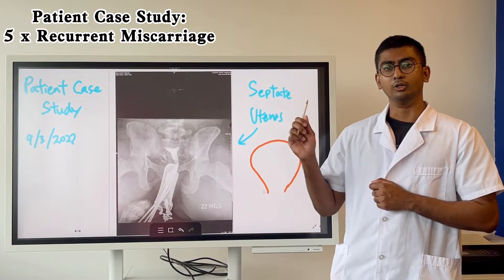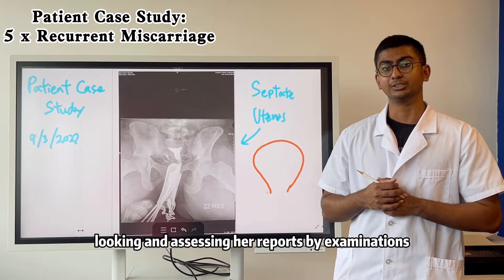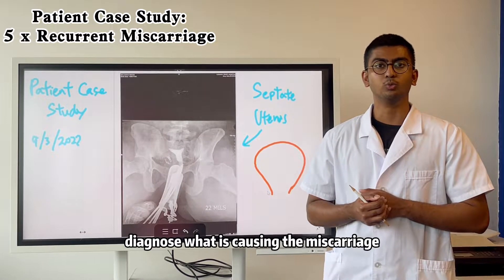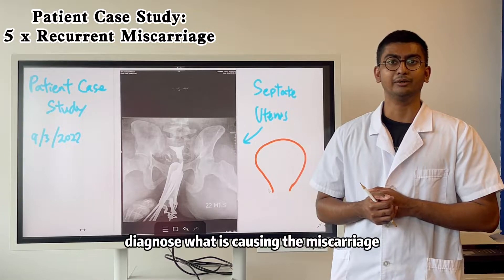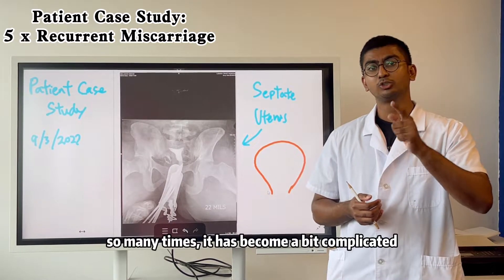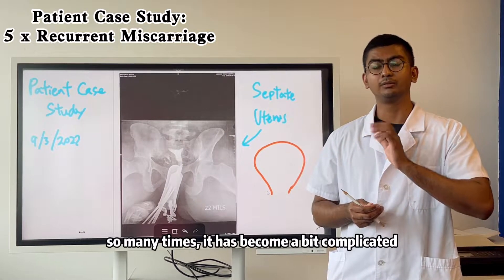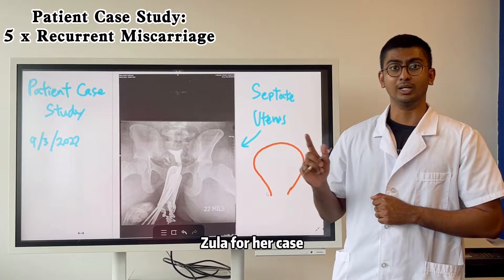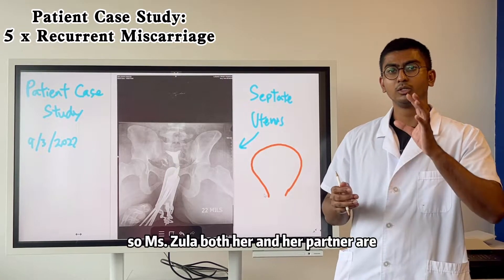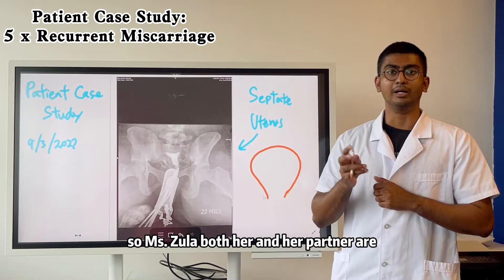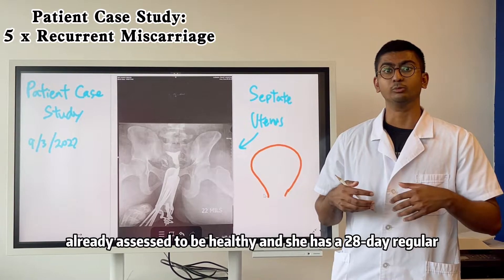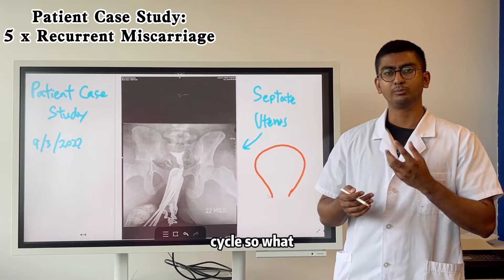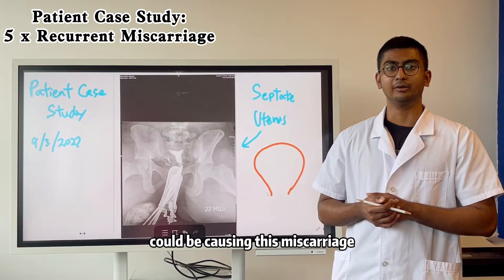Upon looking and assessing her reports and examinations, we could immediately diagnose what is causing the miscarriage. Because it happened so many times, it may have become a bit complicated, although it is still very treatable for Miss Zula. Both her and her partner are already assessed to be healthy, and she has a 28-day regular menstrual cycle. So what could be causing these miscarriages?